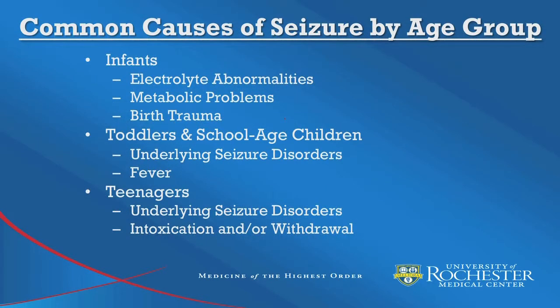While many causes of seizures are seen across all age groups, there are also specific causes more prevalent within each age range. Universally, illness and fever, trauma, and intoxication or electrolyte disturbances can happen at any age. In the infant population, we're much more likely to see things like birth injury, hypoxic ischemic damage, and surprisingly stroke. In childhood and teenage years, we're much more likely to see underlying seizure disorders emerging.